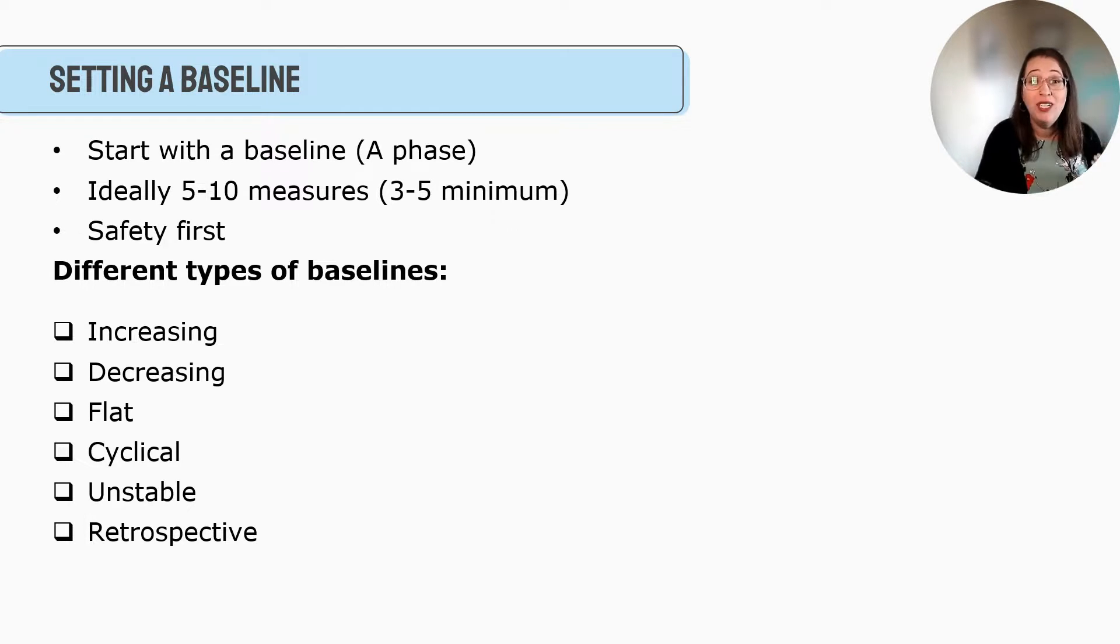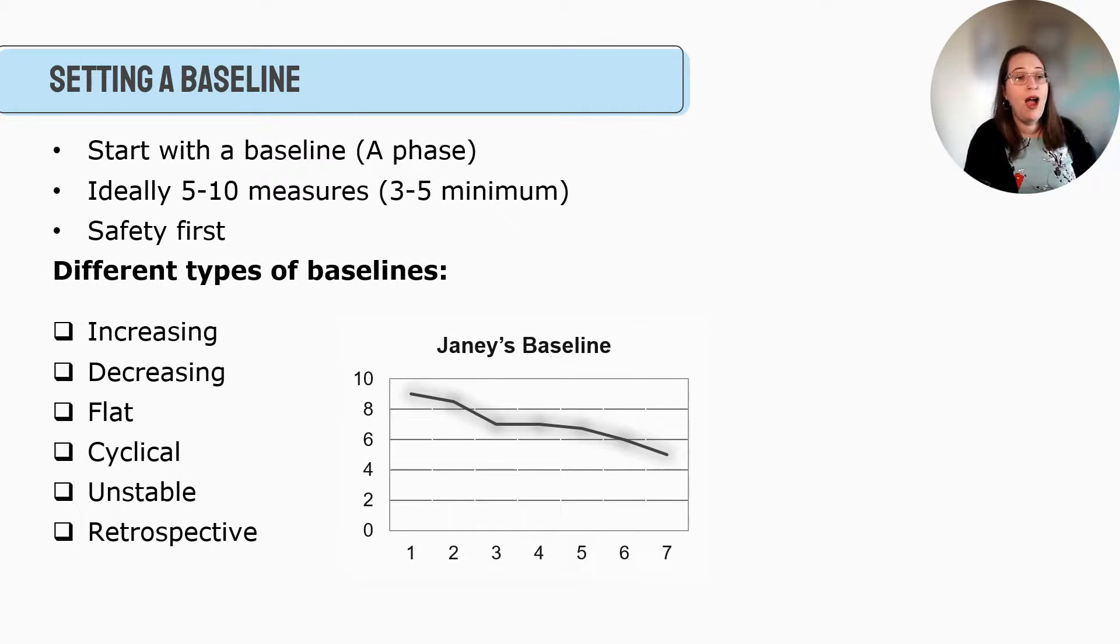Once we've got this baseline, what we do is we're going to chart it. There are different types of baselines. There's increasing, decreasing, flat, cyclical, unstable, and retrospective. So we're going to talk about what those might look like. So let's say I want to talk to Janie about her symptoms of depression. And let's say her target behavior is she just wants to stop crying all the time. So what you might do is you might create a baseline and you say, okay, well, on day one, how many times were you crying? On day two, how many times or how many minutes? And you're going to track that maybe for a week.